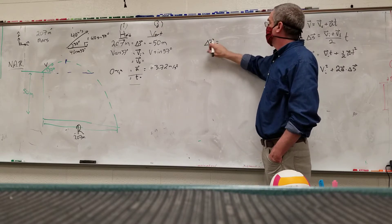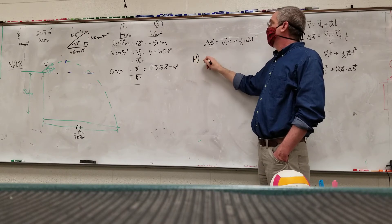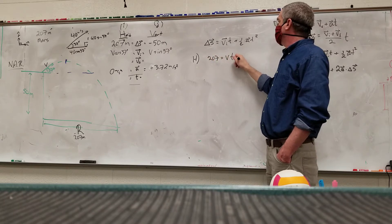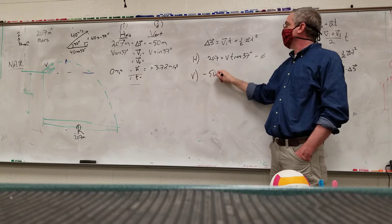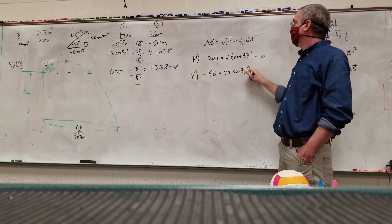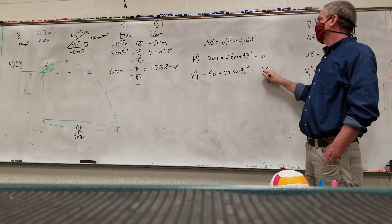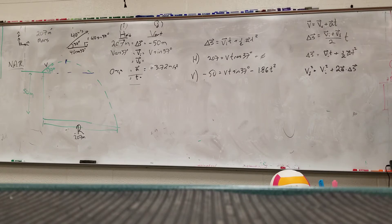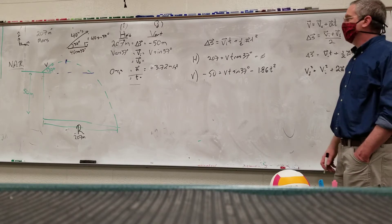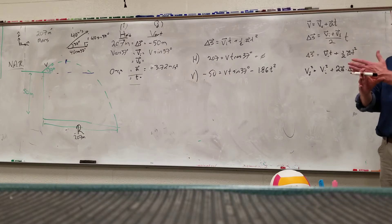Alright, so if my displacement is, drag down the formula first, plus one-half AT squared, and now we plug in our numbers. So horizontally, 207 equals VT cosine theta, cosine 37 degrees, plus zero. Vertically, I have negative 50 equals VT sine 37 degrees minus 1.86 T squared. Yeah, remember that? Two equations, two unknowns is now solvable. Some students bypass the algebra and go straight to using their calculators to figure out that I've got two equations, two unknowns, solving for it.